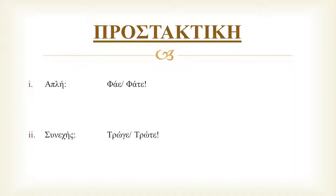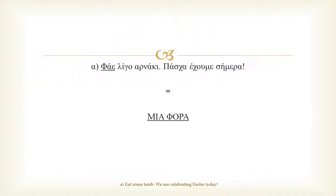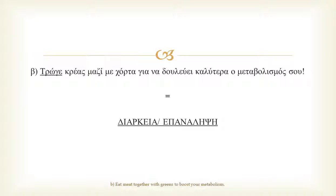And now it's time for the imperative. We have two different examples here. Φάε λίγο αρνάκι, πάσχα έχουμε σήμερα. And τρώγε κρέας μαζί με χόρτα, για να δουλεύει καλύτερα ο μεταβολησμός σου. In example α, we are using the simple imperative form, because eating refers to one particular time — today. While in the second example, we are using the continuous imperative form, because eating is a piece of advice that refers to always.